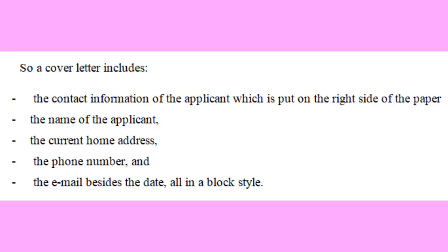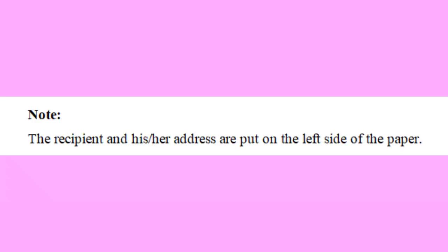The components of a cover letter. A cover letter includes the contact information of the applicant, which is put on the right side of the paper: the name of the applicant, the current home address, the phone number and the email, besides the date — all in a block style. Note: the recipient and his or her address are put on the left side of the paper.